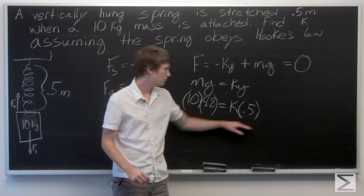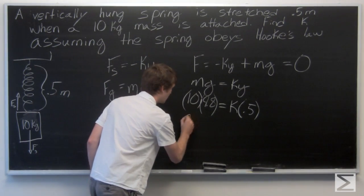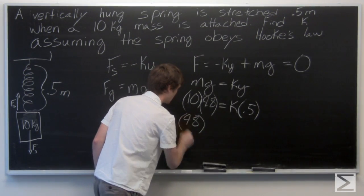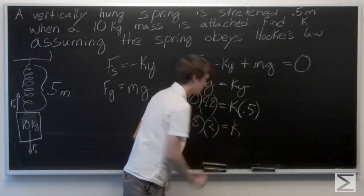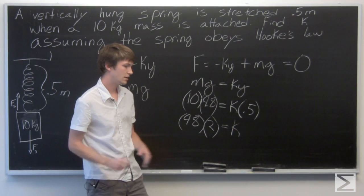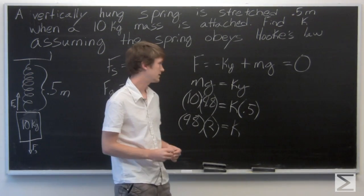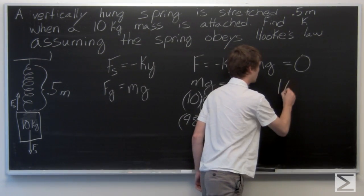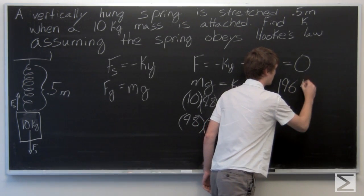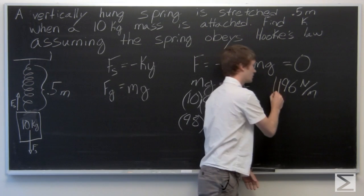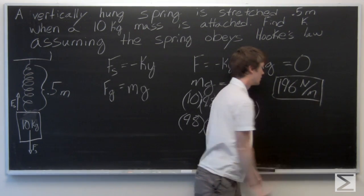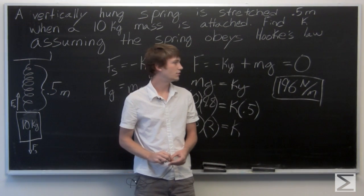So we can solve for k. So k is equal to 98 times 2 which is 196. And our final answer is 196 newton meters.